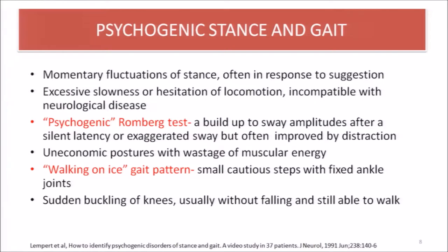Regarding psychogenic stance and gait findings on examination: momentary fluctuation of stance is often seen in response to suggestion; excessive slowness or hesitation of locomotion incompatible with any neurological disease. In the psychogenic Romberg test, patients build up to sway amplitude after a silent latency period; exaggerated sway is seen, but sway is often improved by distraction — whereas in acute organic neurological conditions, sway is worsened by distraction. Anxiety walking shows a small cautious step with fixed ankle joint, like walking on ice; and sudden buckling of knees usually without falling, yet the patient is still able to walk.